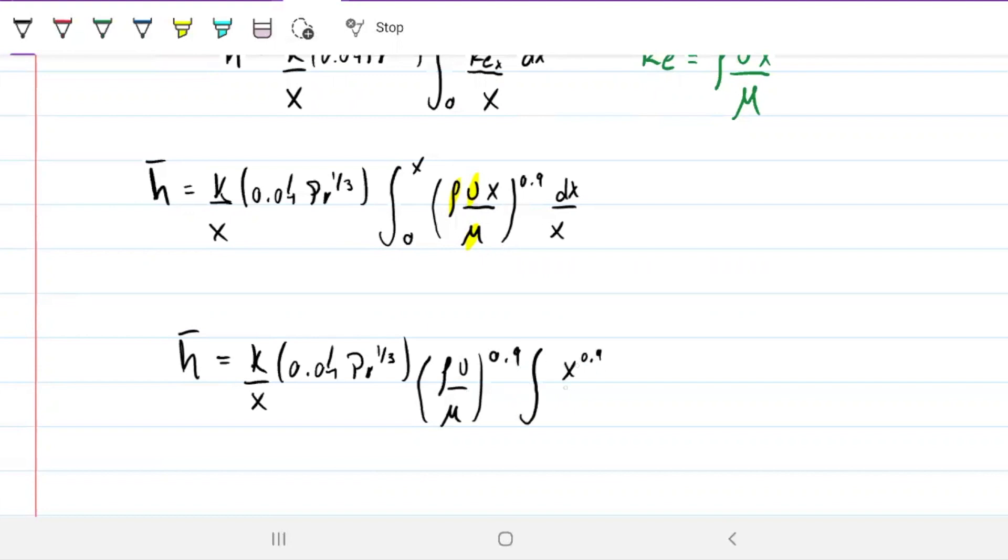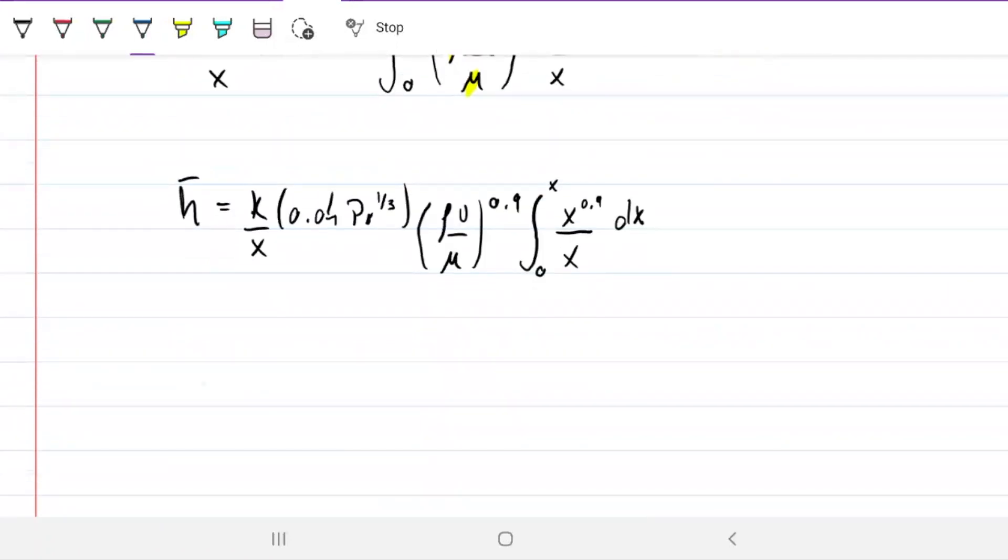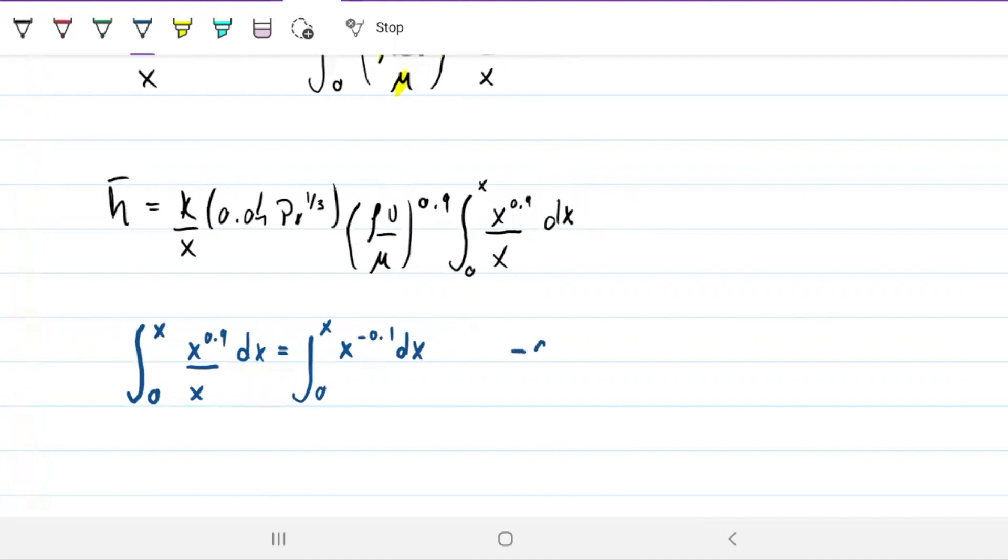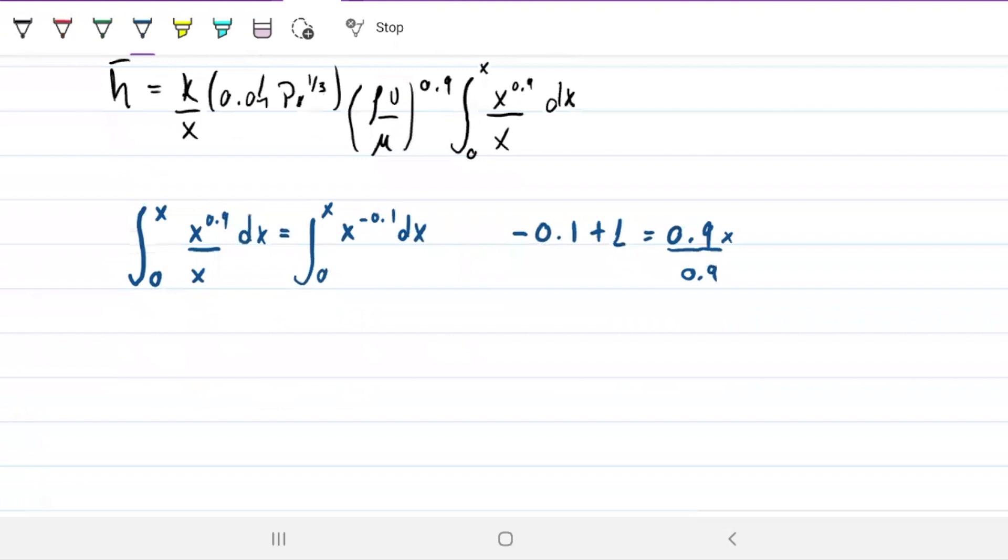We're going to be left with k over x times 0.04 Pr^(1/3) times (ρV/μ)^0.9 of the integral x^0.9 over x dx. And we're going from 0 to x. Hey, that's an integral that we know how to do. That is beautiful. Let's just solve that on the bottom here. So from 0 to x of x^0.9 over x dx. We know this is the same thing as x^(-0.1) dx. And how do we solve that? Well, we're going to get the -0.1, we're going to sum 1 to that. It'll be 0.9x divided by our 0.9.